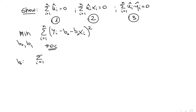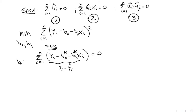The first first-order condition was: the sum from i equals 1 to n of (y_i minus b0 minus b1*x_i) has to equal 0. Once we get the OLS coefficients, this must hold. Notice that y_i minus our prediction for y_i is just y_i minus y_hat_i, which is exactly u_hat_i. Therefore the sum from i equals 1 to n of u_hat_i equals 0. This is property number one — it follows immediately from the first-order condition with respect to b0.